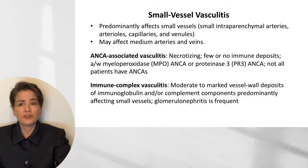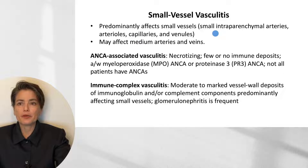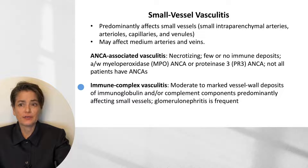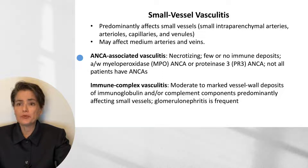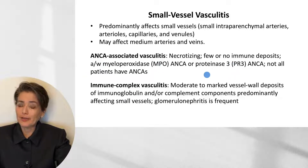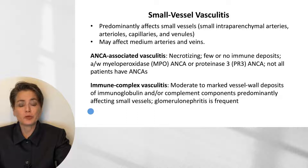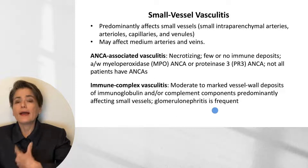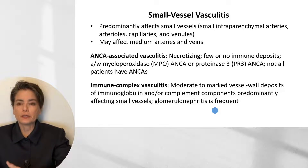Small vessel vasculitis involves small vessels — arteries, arterioles, capillaries, and venules — though medium arteries and veins can also be affected. We divide these into two categories: ANCA-associated vasculitis and immune complex vasculitis. ANCA-associated vasculitis is necrotizing and shows few or no immune deposits; it can be associated with either MPO ANCA or PR3 ANCA, though not all patients have ANCAs. Immune complex vasculitis shows moderate to marked vessel wall deposits of immunoglobulin and/or complement components, predominantly affecting small vessels, with glomerulonephritis frequently associated.